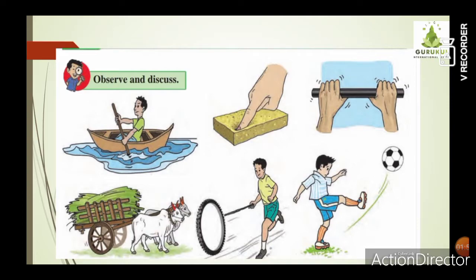In the next picture you can see a bullock cart. The bullocks are applying a force to drag it forward, and wheels help it move easily. In the next picture, a boy is playing with a tire — he applies a force with a stick to give it motion. In the last picture, a boy is kicking a ball. The ball gets motion when the boy kicks it, applying a force on it. In this lesson we will study the various kinds of force and how they work on objects.